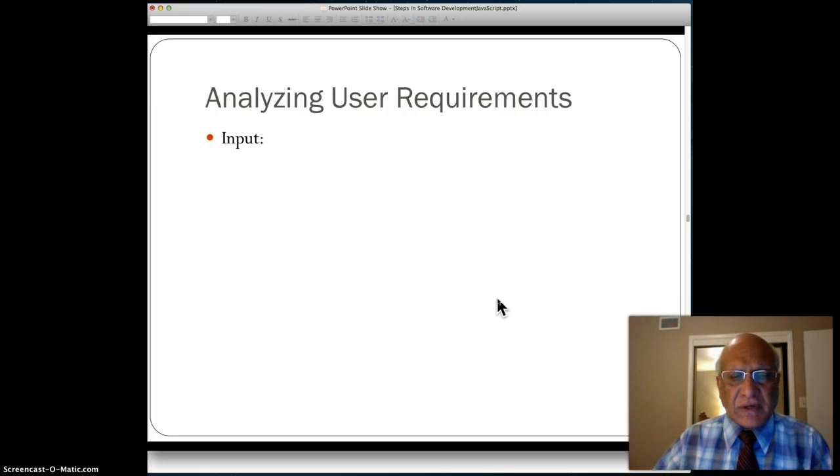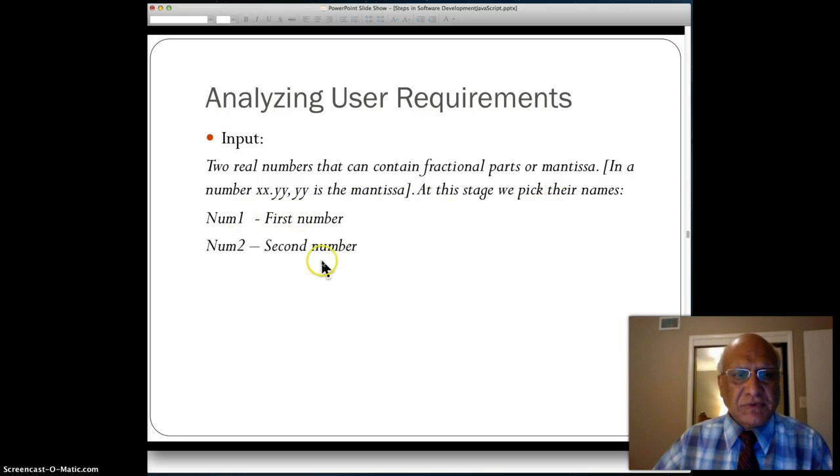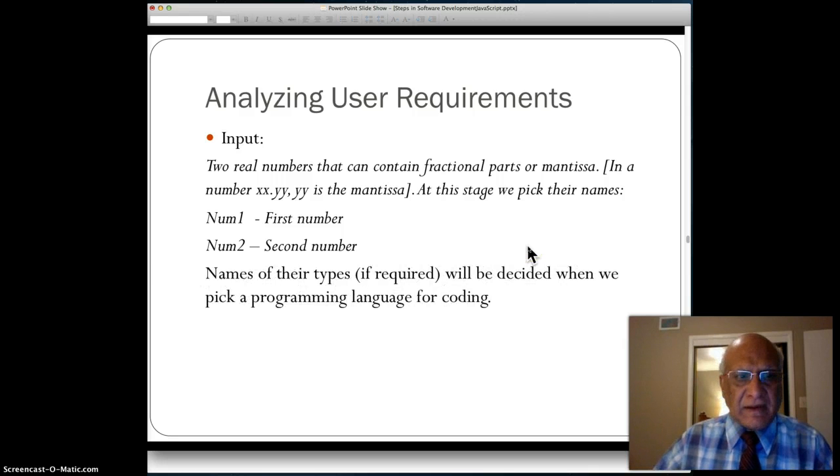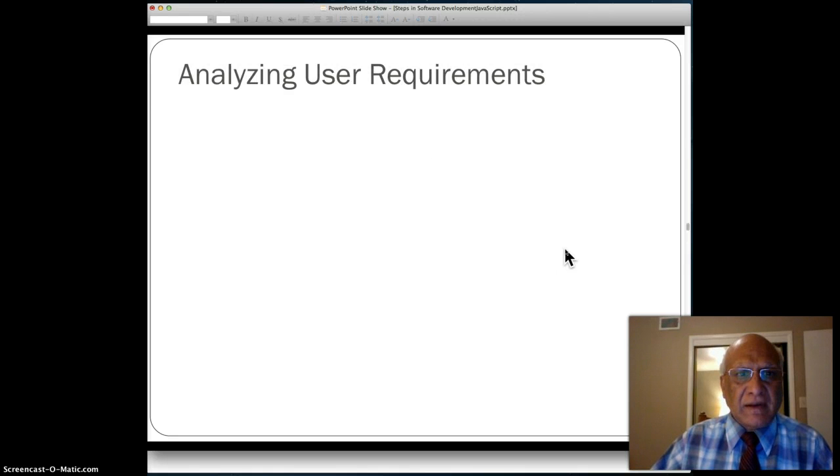Then we analyze the user requirements, and there are three parts to it. First is the input. Inputs are two real numbers that can contain a fractional part or mantissa. For example, in the number XX.YY, YY is the mantissa or the fractional part. At this stage we pick their names - let's say num1 is the first number and num2 is the second number. Names of their types, if required, will be decided when we pick a programming language for coding.